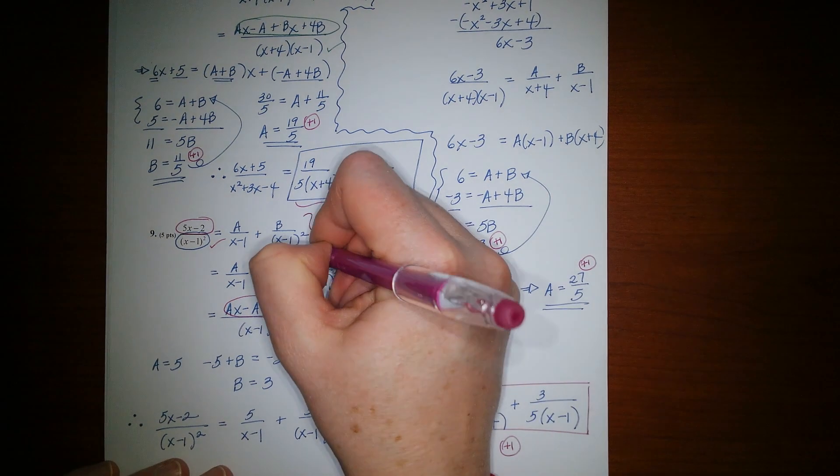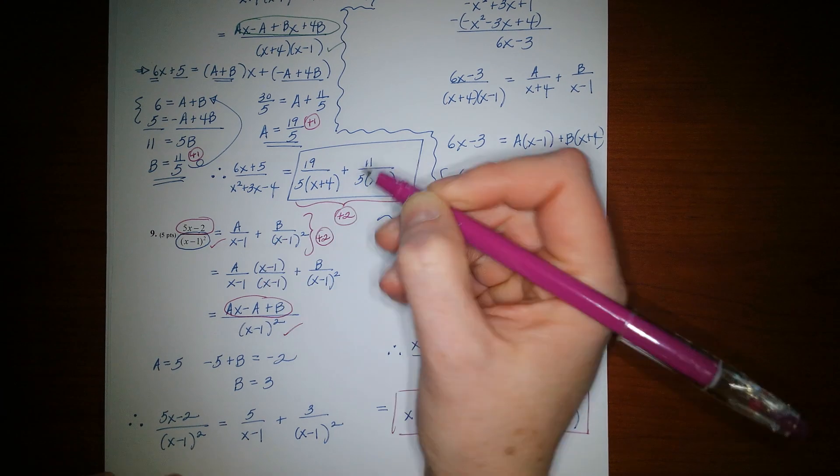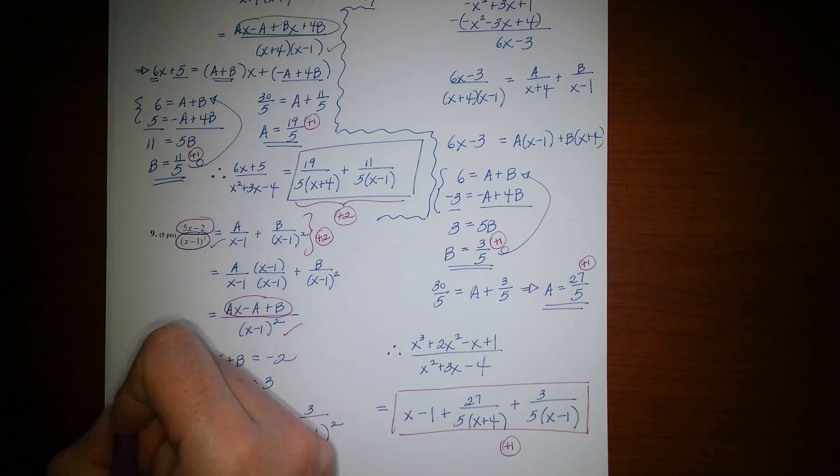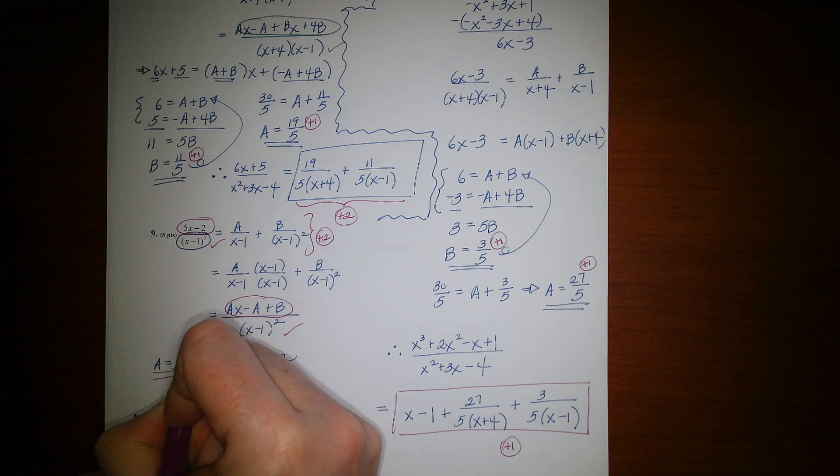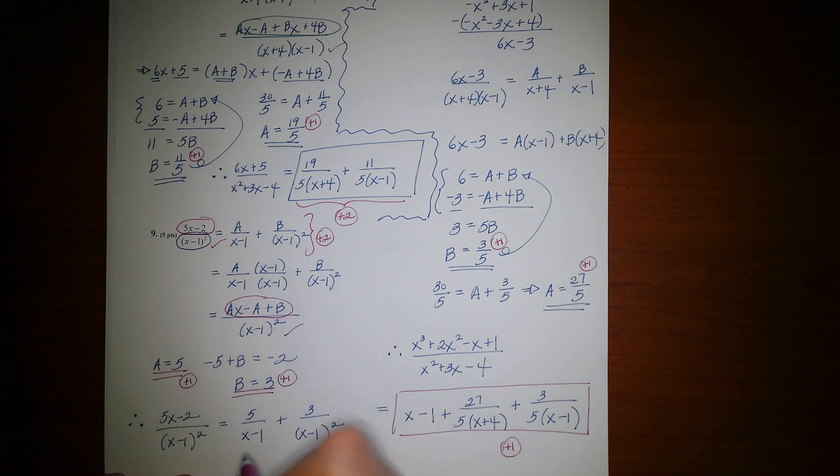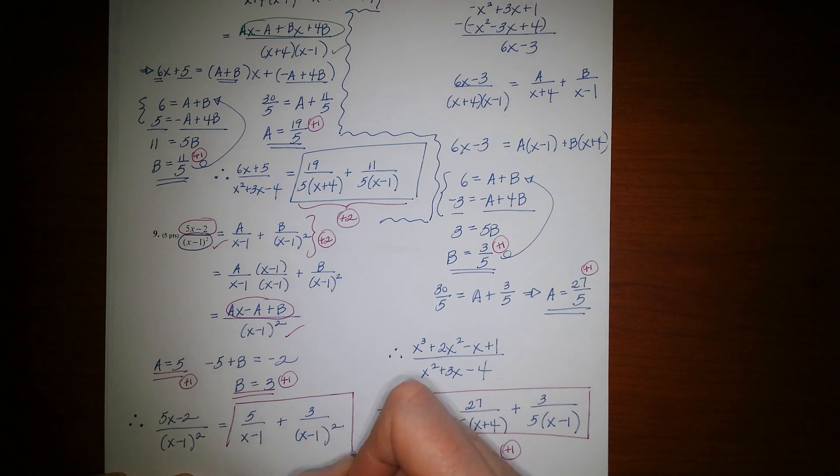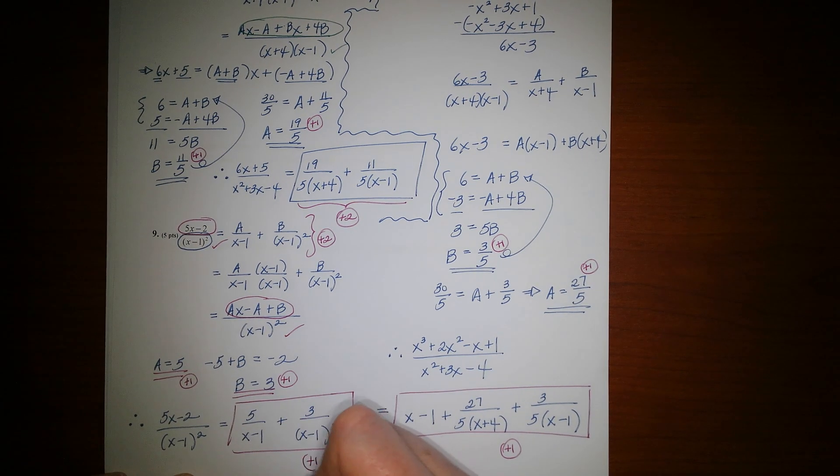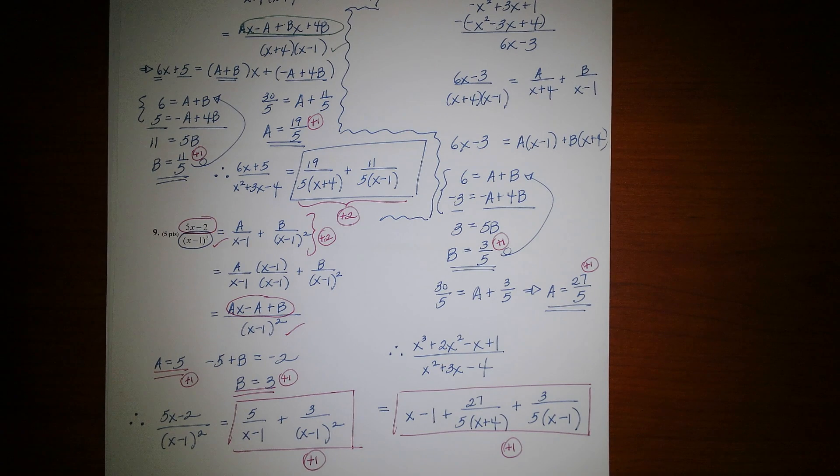Five points. You get two points for the form. You get one point for getting 5 for one constant, one point for getting 3 for the other. And then one point for getting the partial fraction decomposition written correctly. Thank you.